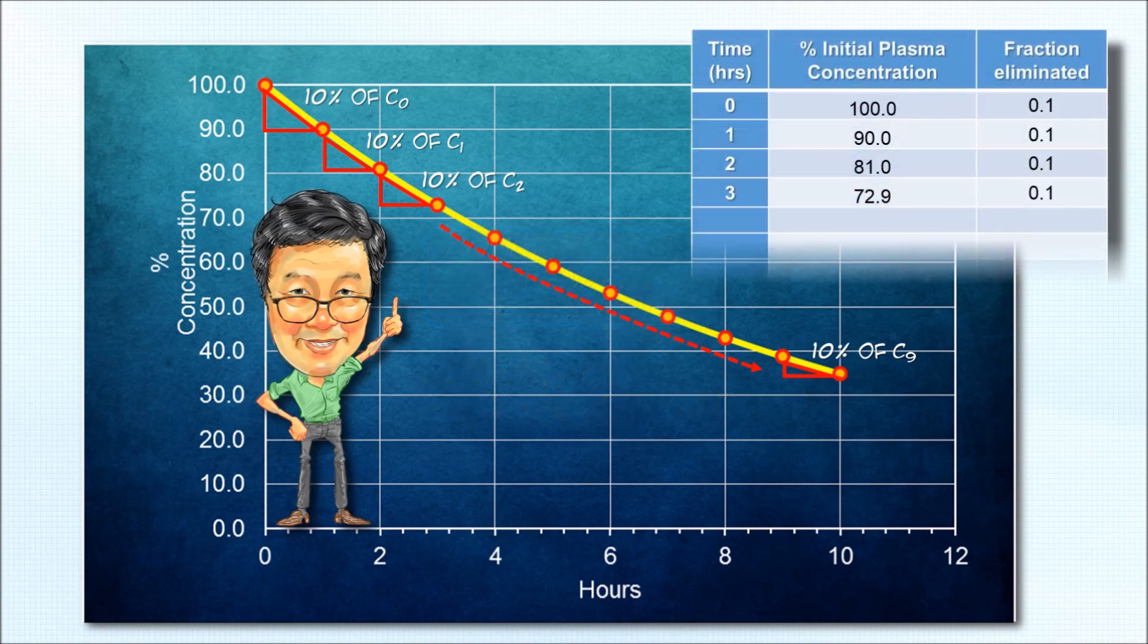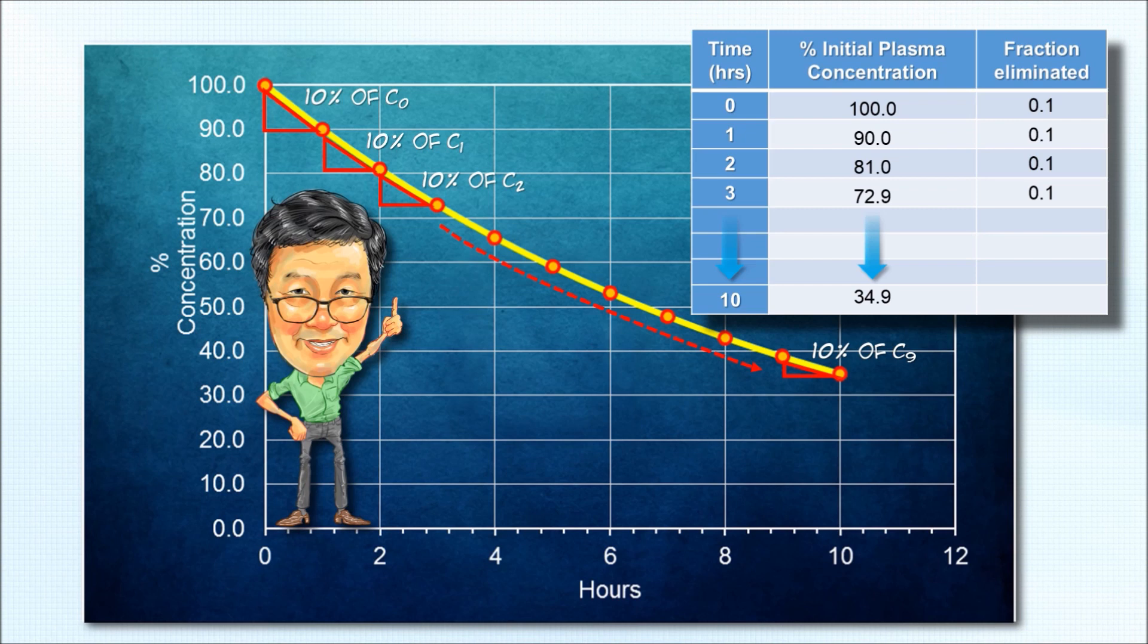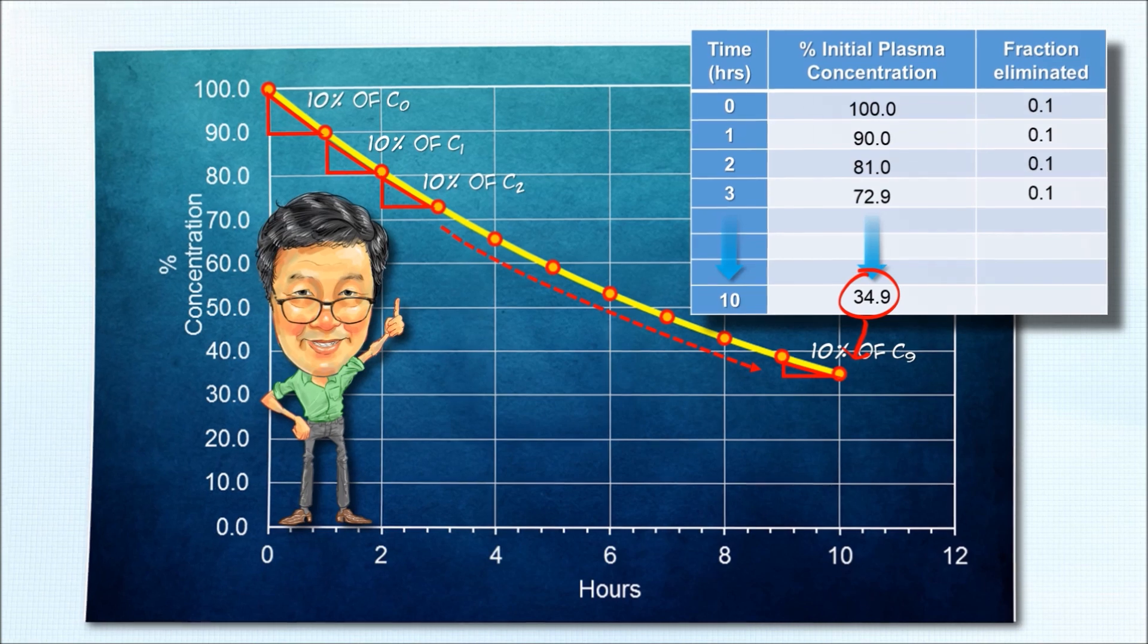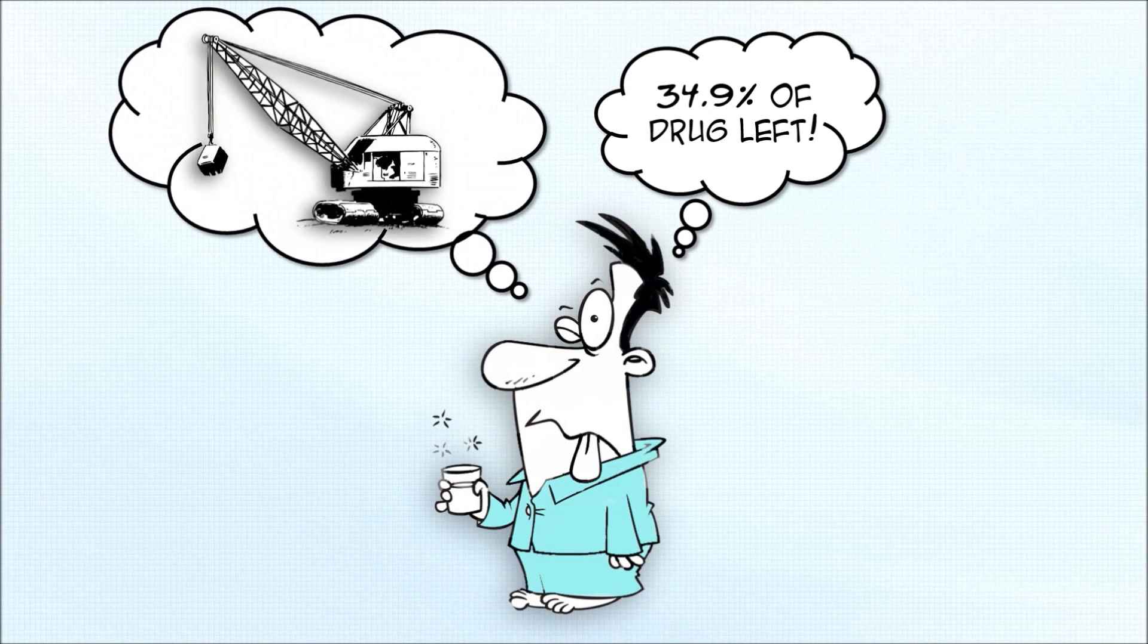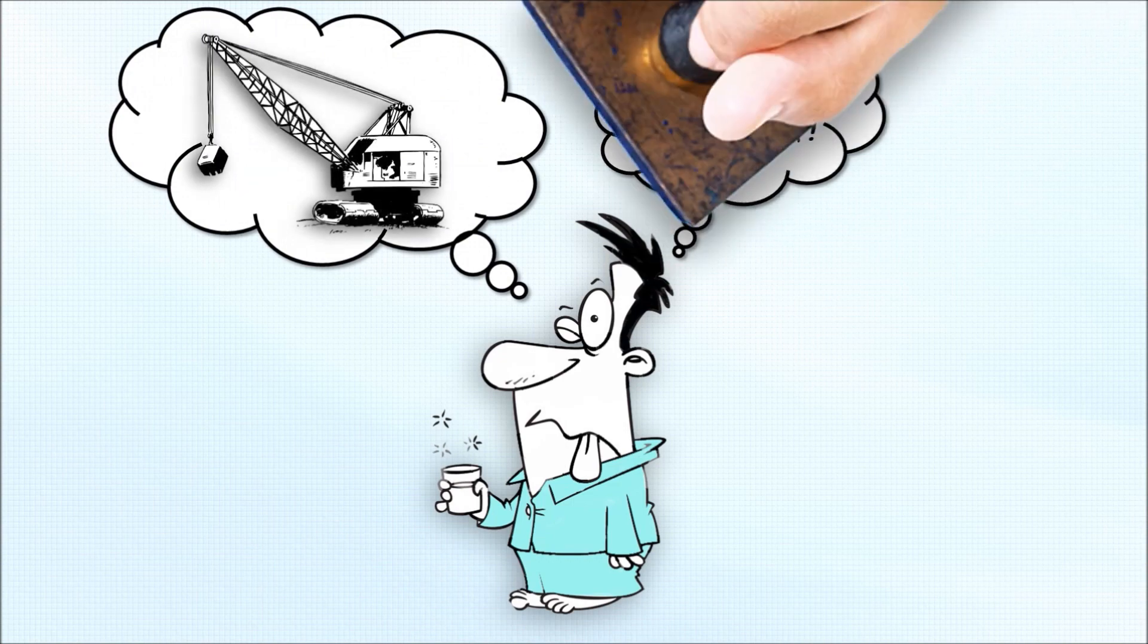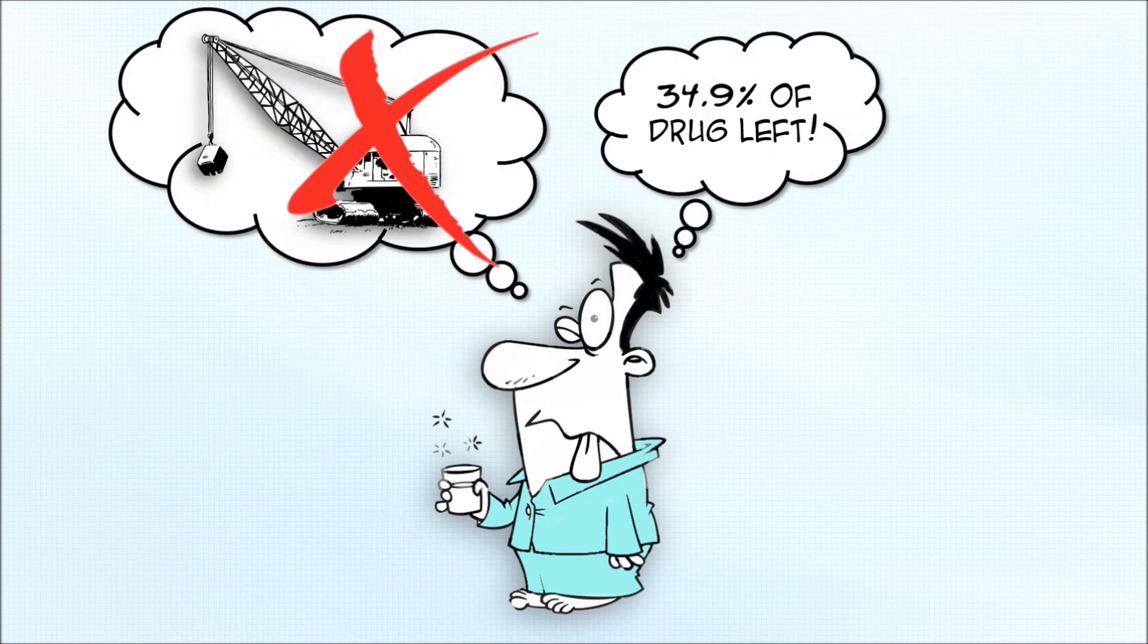Now we can very easily tabulate the hourly loss of drug and estimate the concentrations at any time. In this case, we can estimate that at 10 hours after the initial concentration, the remaining concentration is going to be about 35% of the initial concentration. Now we cannot predict how much drowsiness Mr. Tan will have, but because he still has 35% of drug remaining in his body 10 hours after taking the medicine, it is probably prudent to advise him to avoid operating heavy machines for at least another day.